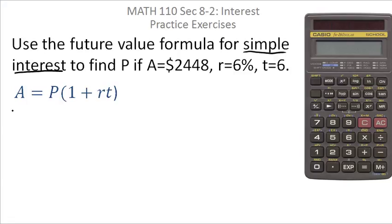Assuming you know this formula, it becomes a matter of plugging in and solving for the principal. R is 6%, which we write as a decimal: 0.06. The time is 6 years.